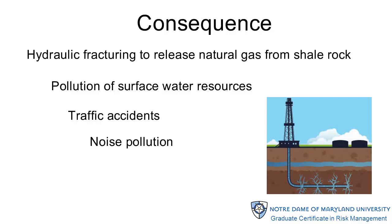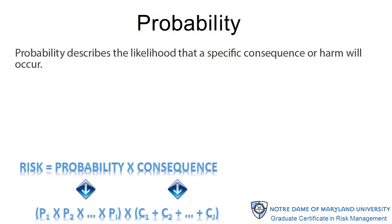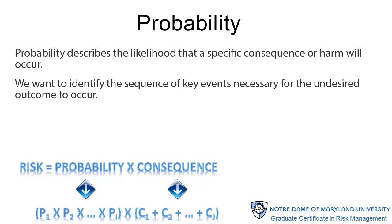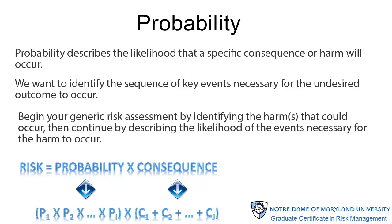Probability describes the likelihood that a specific consequence or harm will occur. Once you have identified the range of consequences relevant for decision making, you'll want to identify the sequence of key events necessary for each of these undesired outcomes to occur. Always begin your generic risk assessment by identifying the harm or harms that could occur, then continue by describing the likelihood of the events necessary for each of these harms to occur. This might mean having a different sequence of events for each specific consequence, or, as is more likely the case, one sequence of events may cause multiple consequences to occur.